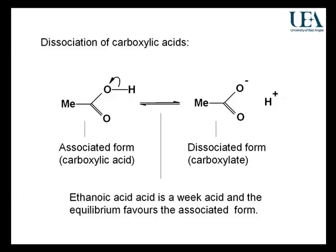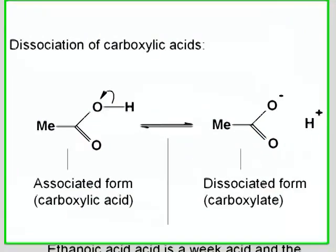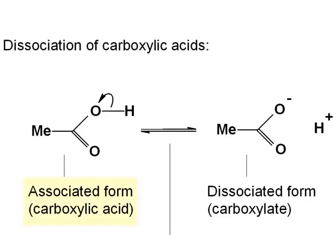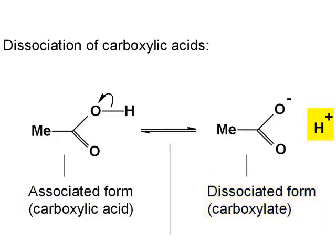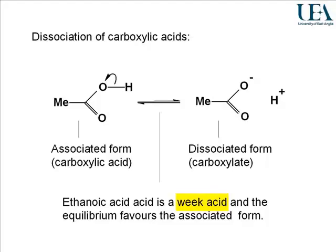I've written for you the acid-base equilibrium between a carboxylic acid and its anion. Many of you will have learned to describe the left-hand side of an equilibrium like this as an associated form and the right-hand side as a dissociated form. The dissociation is the hydrogen coming from the acid to become a proton. So this is an equilibrium, the acid providing a proton in its dissociated form.